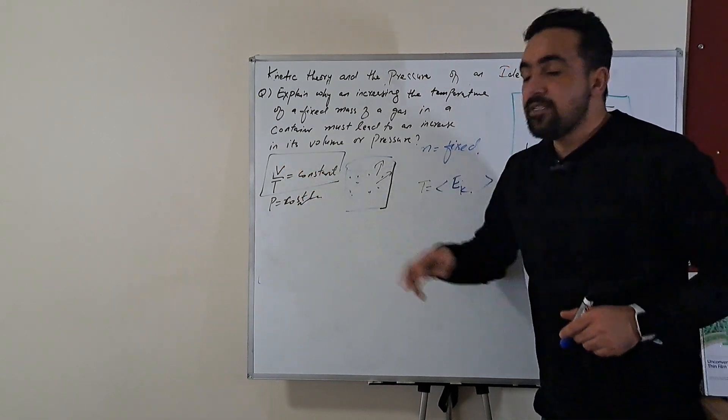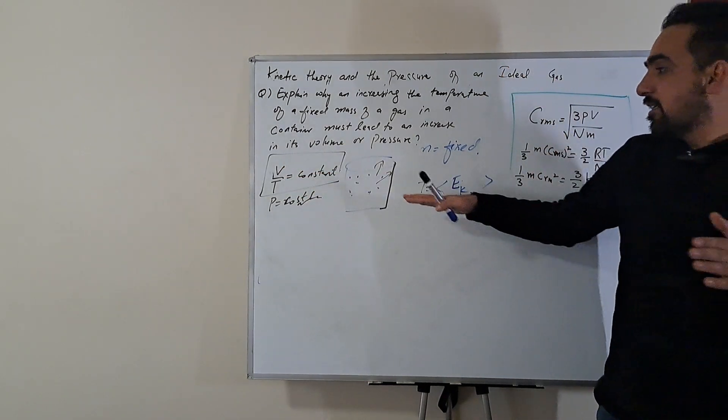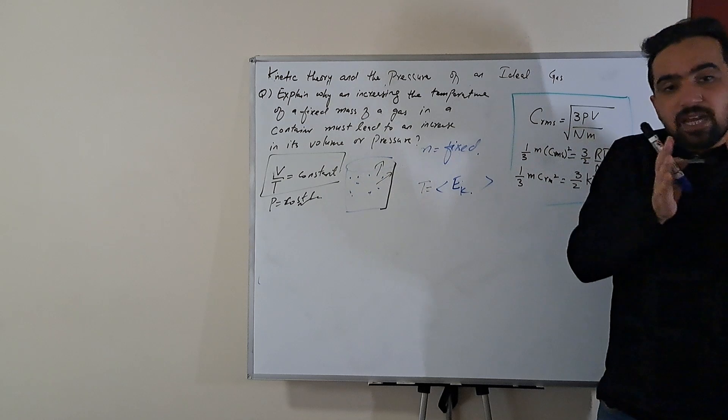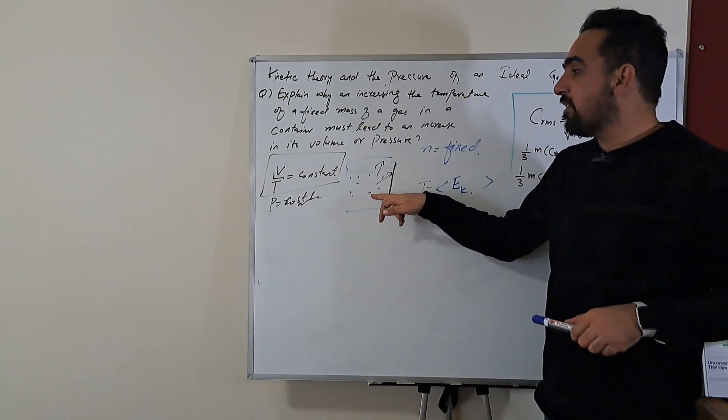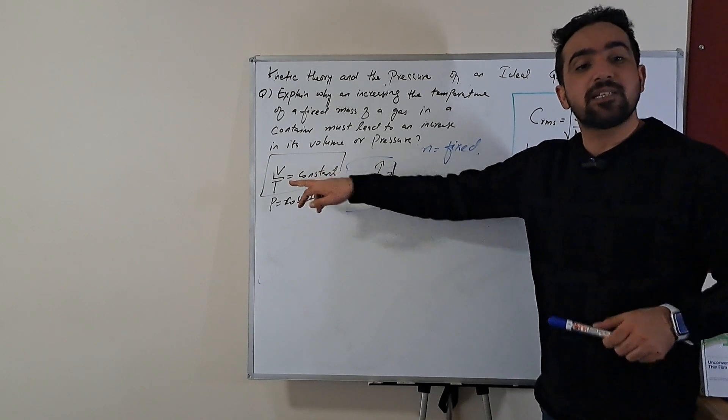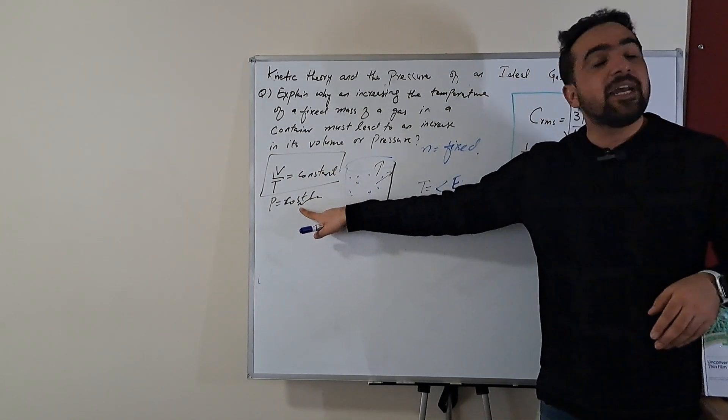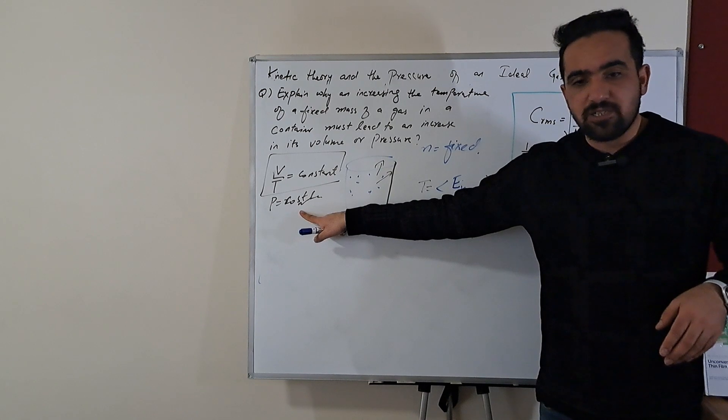So that's why when you increase the temperature it means that we are increasing the average kinetic energy of the system. And when you have increased the average kinetic energy according to Charles's law, it will expand, keeping that the pressure is constant.